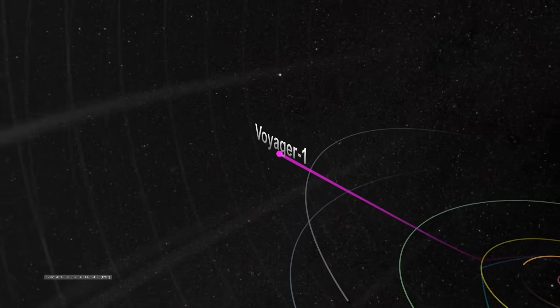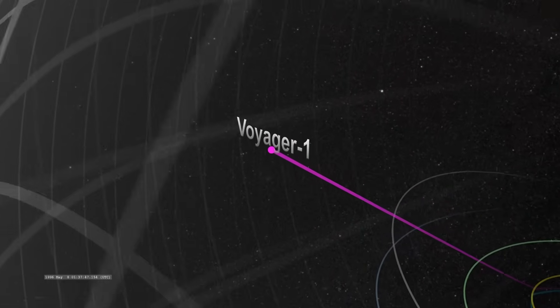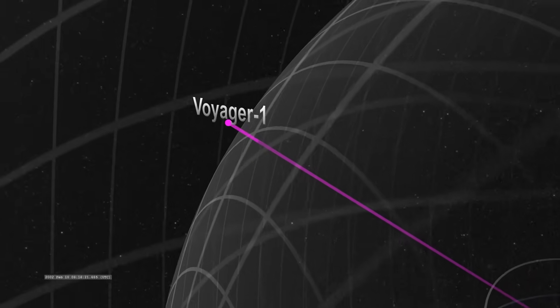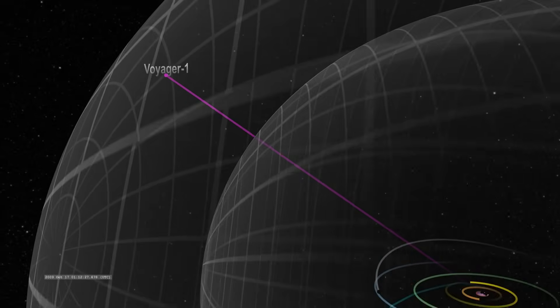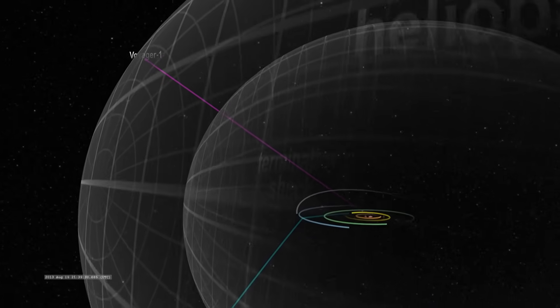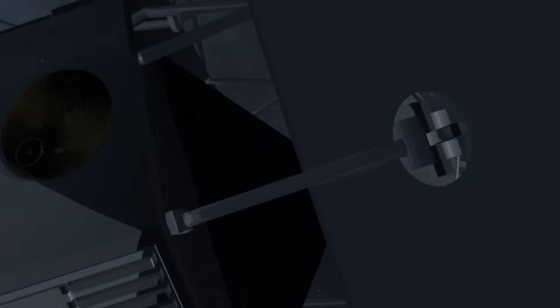However, the reality was far more surprising than the theory. In 2012, when Voyager 1 crossed the heliopause, its sensors recorded abnormally high temperatures. Voyager 2 confirmed this finding in 2018 when it crossed the boundary at a different point, billions of kilometers away.